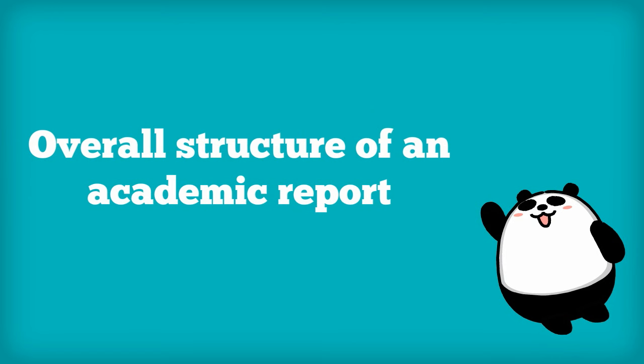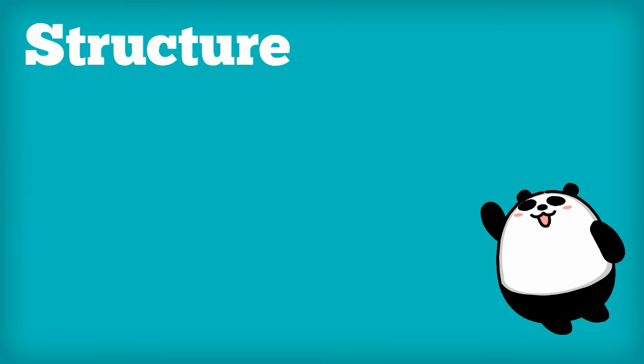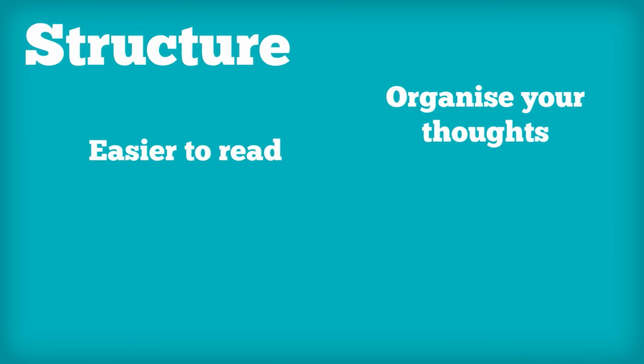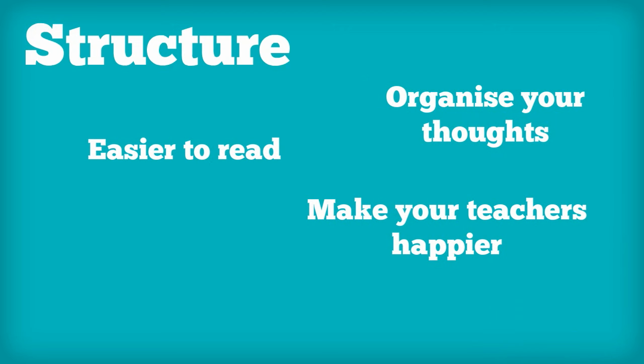The first thing to look at when writing a report is the structure. The structure is very important because it will help us to organize our thoughts and make it easier for our tutors to read our work, which will make them happier. A good way to do this is to use clear headings, subheadings and numbering. You should also underline your headings so that they're easier to see and therefore easier to read.